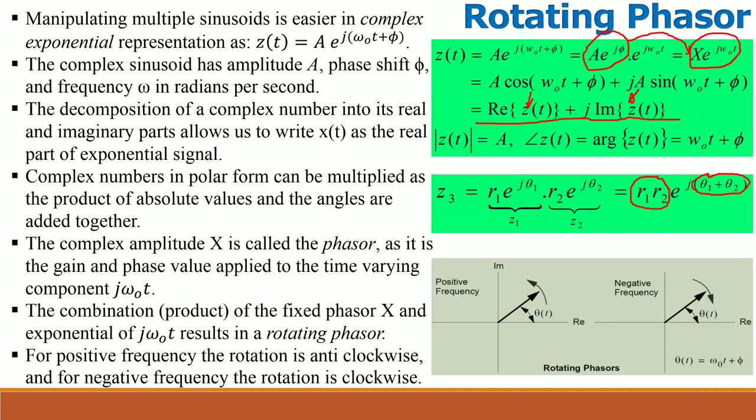The complex amplitude X is called the phasor, as it is the gain and phase value applied to the time varying component e^(jω₀t), which has unit magnitude. The combination, product of the fixed phasor X and e^(jω₀t) results in a rotating phasor. For positive frequency the rotation is counter clockwise, and for negative frequency the rotation is clockwise.